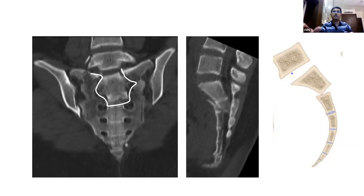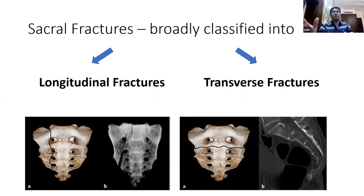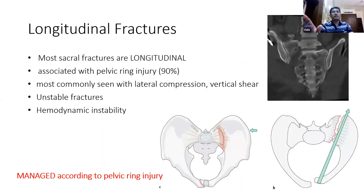This is classified in Roy-Camille's classification of transverse fractures as a Type 2 transverse fracture. In general, sacral fractures can be broadly classified into longitudinal fractures and transverse fractures. Looking at this patient with two longitudinal lines going to the sacral foramina and a transverse fracture through the S1 sacral zone, how do we classify it — as a longitudinal fracture, a high transverse, or a low transverse? This broad classification into longitudinal and transverse fractures is the starting point.